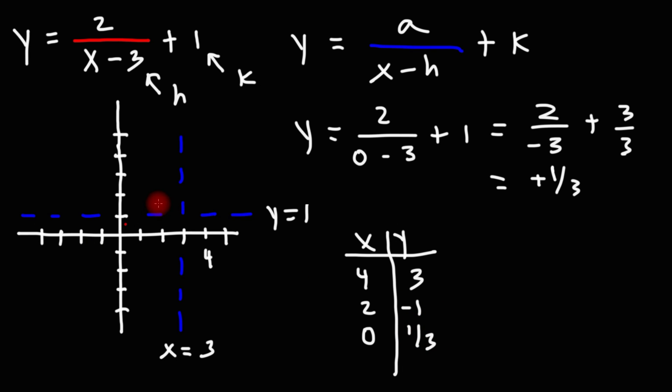So plotting these points, we have x is 4, y is 3, so we have a point there. When x is 2, y is negative 1. And when x is 0, y is 1 third. So we could draw a more accurate sketch with this. Of course, you can add more points to make it even more accurate. But that's a rough sketch of this particular reciprocal function.